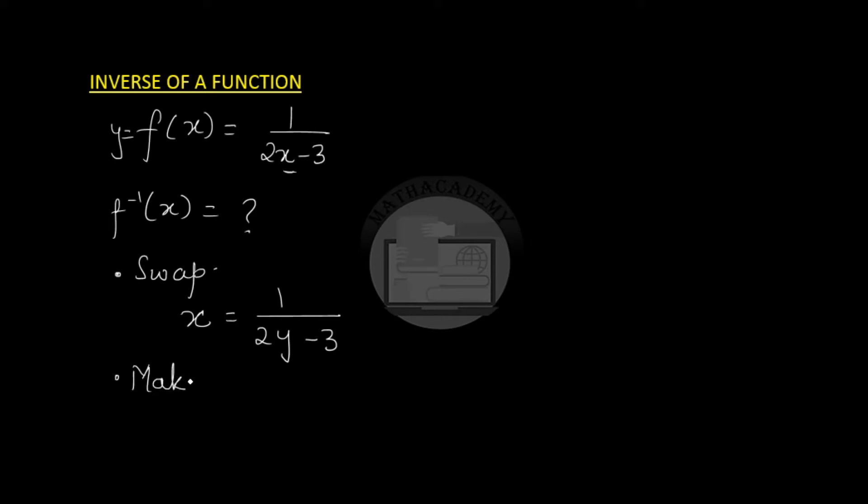To make y the subject, we do a cross multiplication, so 2y minus 3 is equal to 1 over x. The x comes down here and 2y minus 3 goes up here, so 2y is equal to 1 by x plus 3.